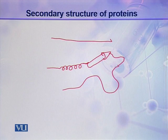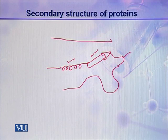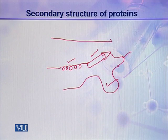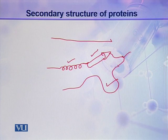Secondary structures include a number of types like alpha helix, beta sheets, and turns — which include beta turns and gamma turns. It also contains loops like omega loops, as well as random coils. There are a number of secondary structures which are repeated in the structure of a protein, and all these are local conformational changes in a polypeptide chain.